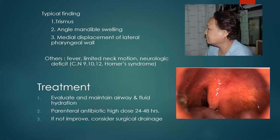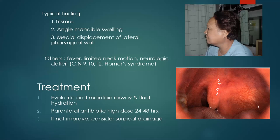The patient will present with trismus — failure to open the mouth — swelling at the angle of the jaw, and medial displacement of the lateral pharyngeal wall. On oropharyngoscopy you see a bulge in the soft palate and both anterior and posterior pillars because of the superior constrictor muscle being pushed into the midline. Other symptoms include fever, limited neck movements, neurological deficits of cranial nerves 9, 10, 11, and Horner's syndrome — when infection has gone to the cervical sympathetic plexus running along the carotid sheath.